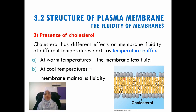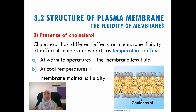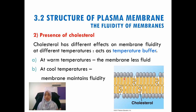We have now covered the structure of the plasma membrane and the fluidity of the membrane. The plasma membrane is described as 'fluid' because its components, such as phospholipids and membrane proteins, can move laterally or sideways throughout the membrane — meaning it is not solid. The membrane is described as a 'mosaic' because, like a mosaic, it is made up of many different parts that compose the plasma membrane.